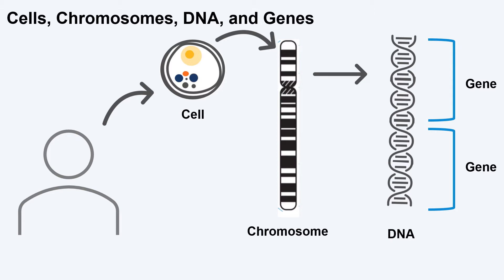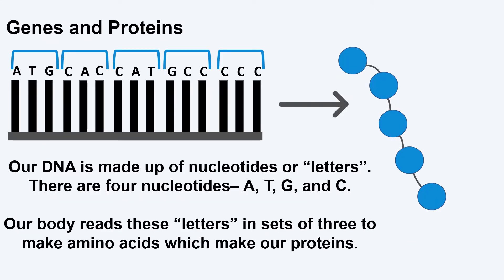Each instruction is called a gene. Each gene is made up of letters, and those letters are called nucleotides. Our body reads these letters in groups of three to make amino acids. How our body reads the DNA in sets of three is called a reading frame. Amino acids are then strung together to make proteins. Sets of three letters in the DNA also tell our cells when to stop making the protein — these are called stop codons.